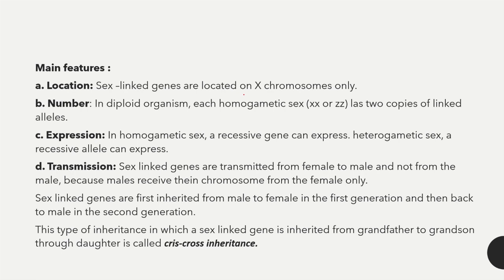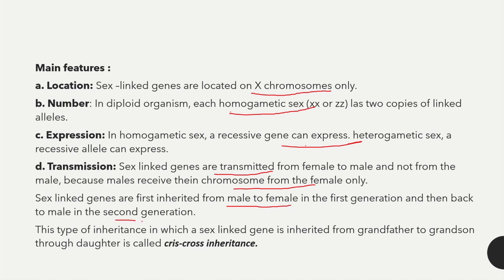Sex-linked genes are located on the X chromosome only. In diploid organisms, each homogametic sex has two copies of linked alleles. A recessive gene can express in heterogametic sex. Sex-linked genes are transmitted from female to male because the male receives the X chromosome from the female only. This type of inheritance from grandfather to grandson through the daughter is called criss-cross inheritance.